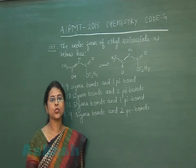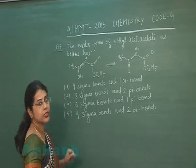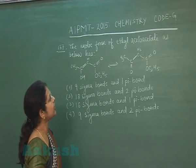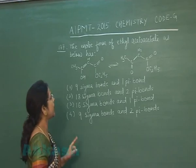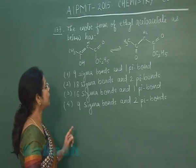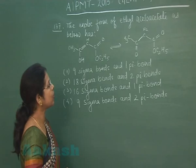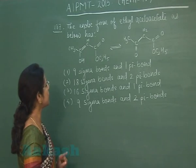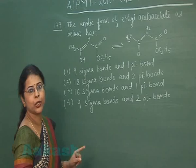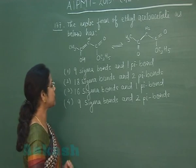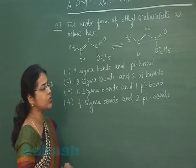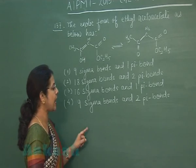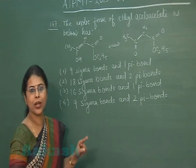Moving to the next question. Question number 137: The enolic form of ethyl acetoacetate as shown has — first option: 9 sigma bonds and 1 pi bond; second option: 18 sigma bonds and 2 pi bonds; third option: 16 sigma bonds and 1 pi bond; fourth option: 9 sigma bonds and 2 pi bonds.